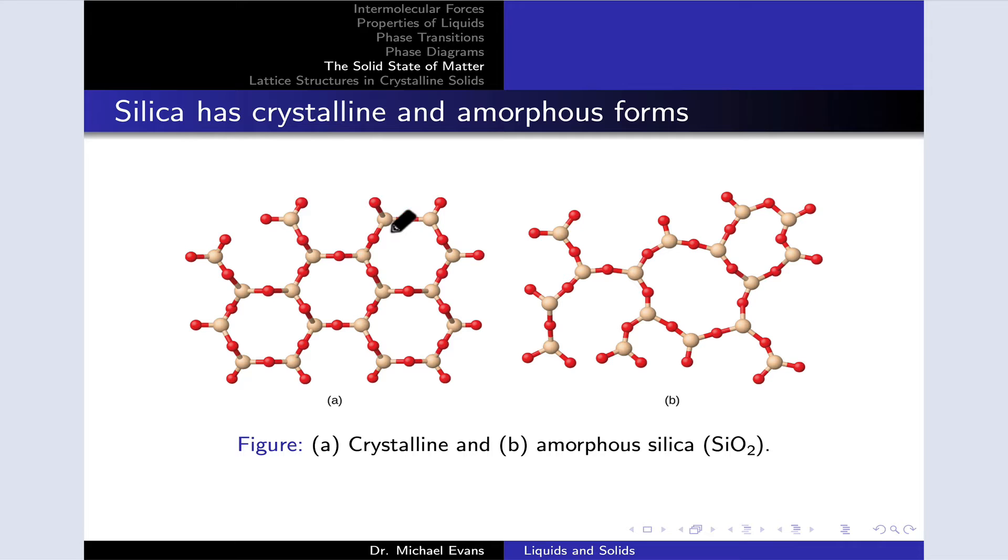On the left here we see a regular pattern of hexagons in the structure, and these hexagons indicate that we're looking at a regularly ordered set of SiO2 units. This is crystalline silica on the left.